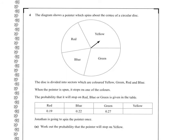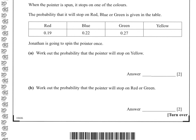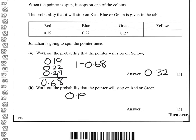Question 4. To work out the probability that it stops in yellow, we need to add together the other probabilities. So that's 0.1, 0.22, and 0.27. 2 and 7 is 9, 9 and 9, 18 carry 1, 2, 4, 6. So that's 0.68. So yellow will be 1 minus 0.68, which is 0.32. The probability that it will stop in red or green is the probability of red plus the probability of green, which gives 0.46.